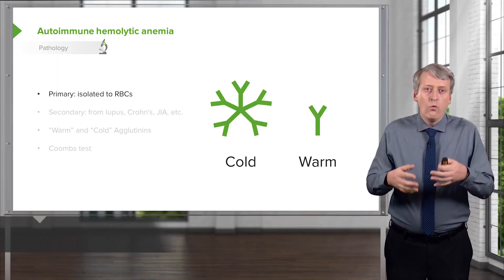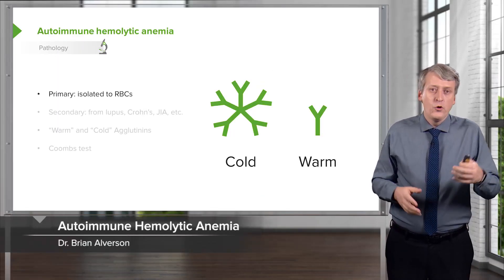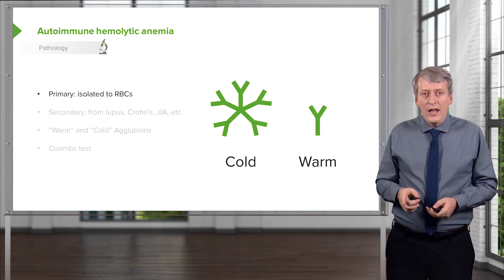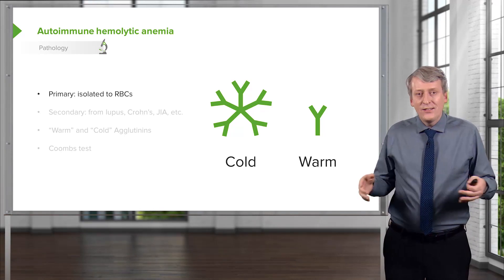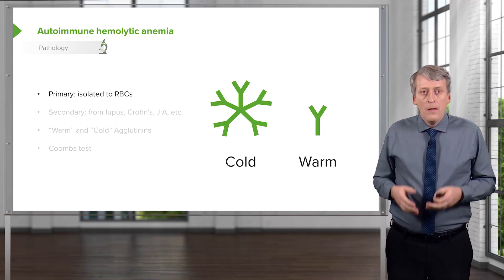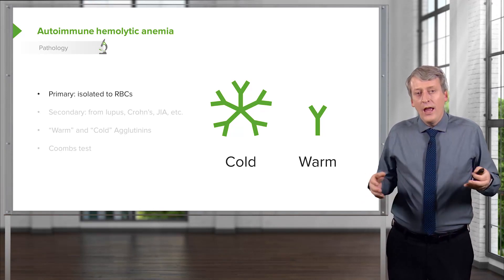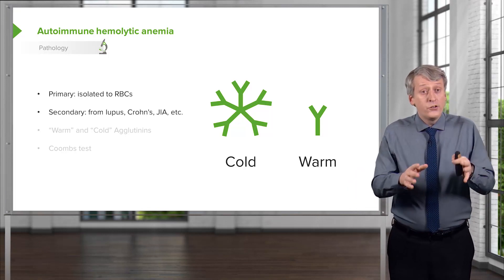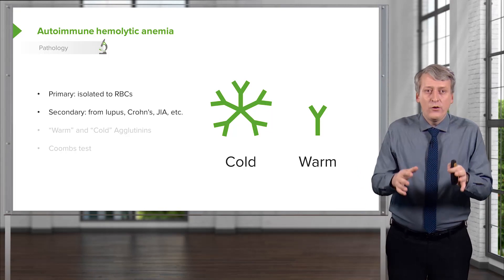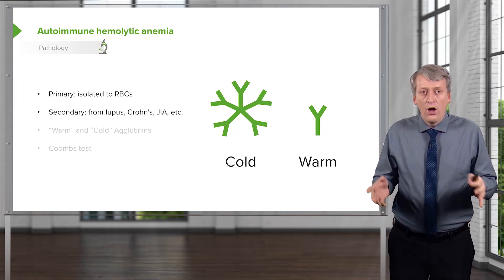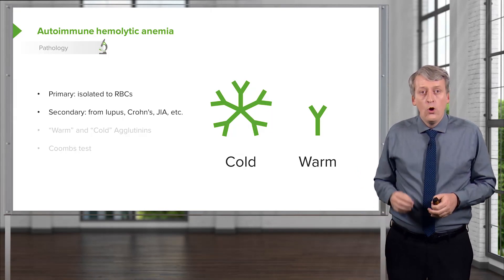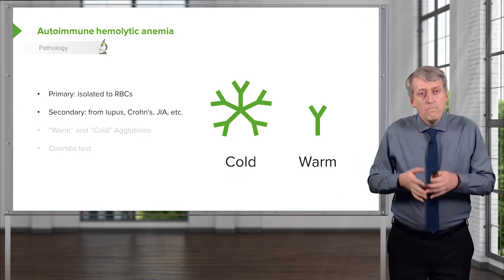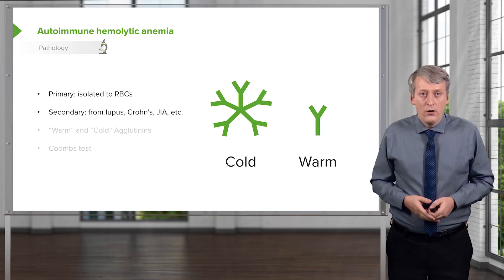Let's switch gears now to an acquired anemia, such as autoimmune hemolytic anemia. This is a primary problem that's isolated to the red blood cells — patients are going to have an antibody attack on their red blood cells. Alternatively, this could be a secondary problem from a generalized autoimmune condition like lupus, Crohn's, or juvenile idiopathic arthritis. Most of the time, it's primary.